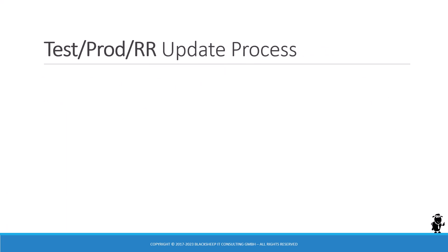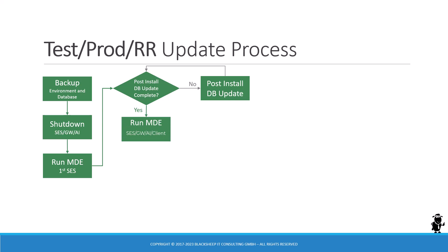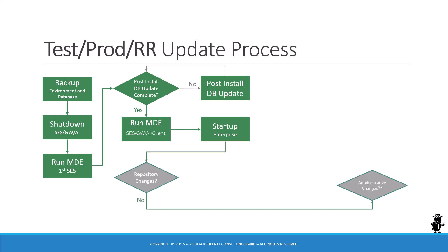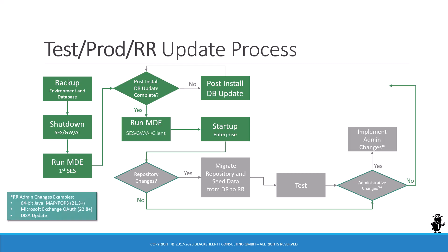For test, production, or RR environments, you start with a backup, shut down the software, and run the Modular Deployment Engine in update mode on the first Siebel Server to complete the post-install database update. Then update any other Siebel CRM instances in that environment and start up the environment. If there are no repository changes and no administrative changes, you're done. The longer path applies if you had repository changes — you fire up the migration application to migrate the repository, don't forget seed data changes from the development environment, and test thoroughly. Then implement any administrative changes, and the update of the test or production environment is complete.